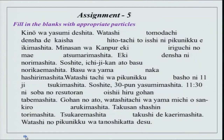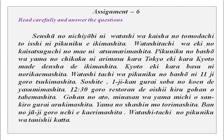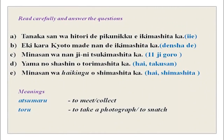Now, fill in the blanks with proper particles — you can check your particles now. And this was the reading comprehension: you were to read the passage and answer the questions. The answers are given right here. You can write proper sentences and full answers. Atsumarimasu means 'to meet' and tooru means 'to take a photograph' or 'to snatch something from someone.' So, this was your assignment.